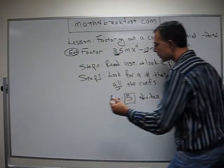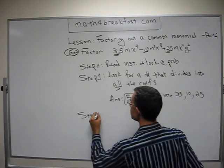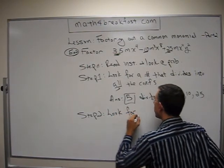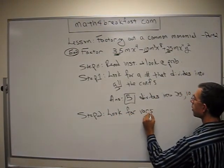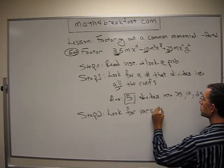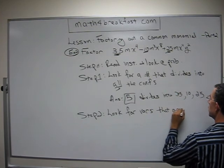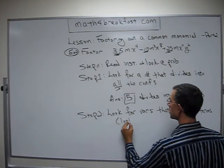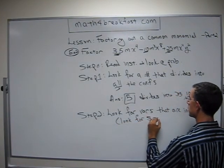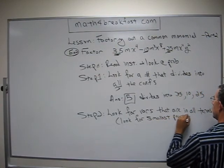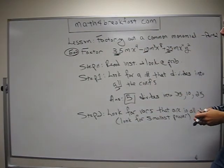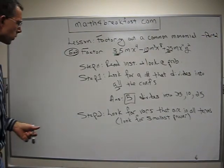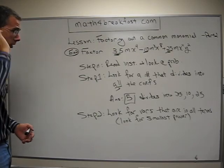Are we done? No, because we haven't finished factoring. Factoring is when you take something, let's say this polynomial, and you break it up into two other things, or more, that when you multiply back together would get back to this answer. Step 2, if step 1 doesn't do it, move on to 2 to help you. Step 2 is look for variables that are in all terms. In parentheses here, look for smallest power.